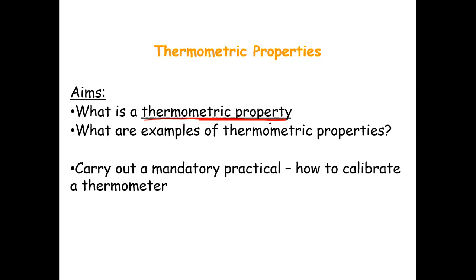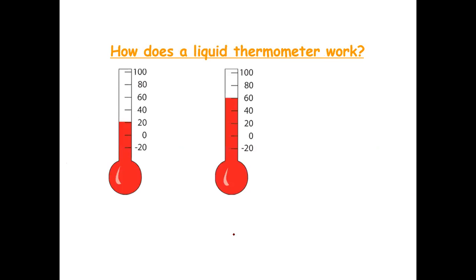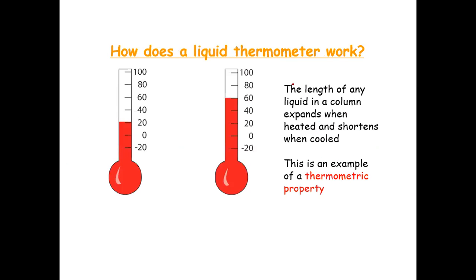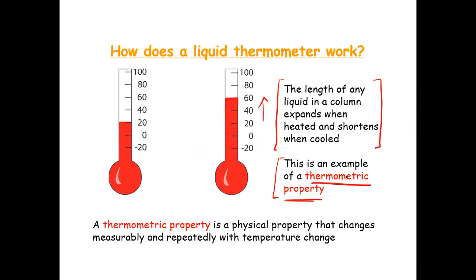We'll also look at what a thermometric property is and some examples, along with a mandatory experiment we'll do when we return to school. A thermometric property is a variable that changes predictably with temperature. For example, in a liquid thermometer, the liquid expands when heated and fills the column further — and the amount it expands is predictable and always the same for a given temperature change.